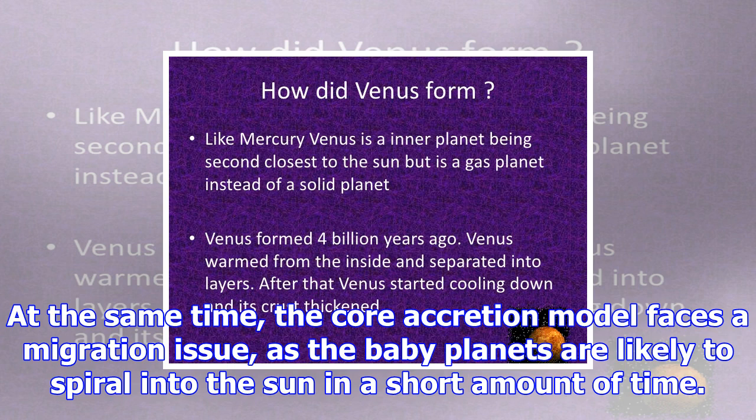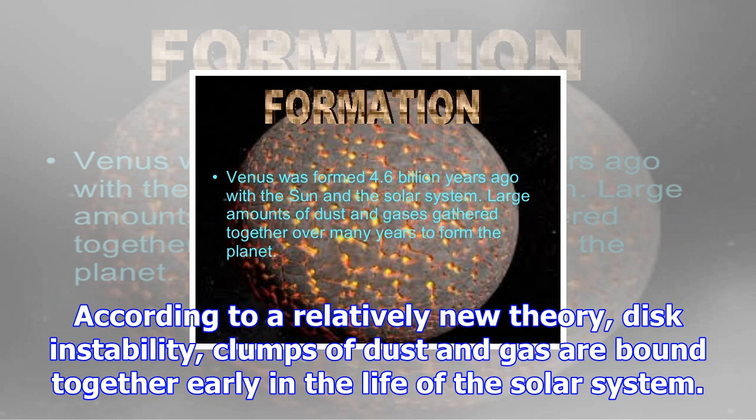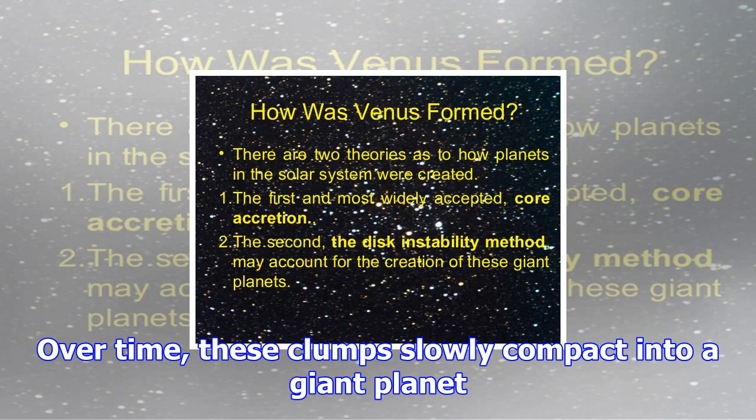But simulations have not been able to account for this rapid formation. According to models, the process takes several million years, longer than the light gases were available in the early solar system. At the same time, the core accretion model faces a migration issue, as the baby planets are likely to spiral into the Sun in a short amount of time.